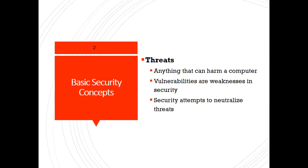A third vulnerability is human vulnerability. The weakest link in many cyber security architectures is the human element. User errors can easily expose sensitive data, create exploitable access points for attacks, or disrupt systems. Human error is a very weak element in the computer security process.